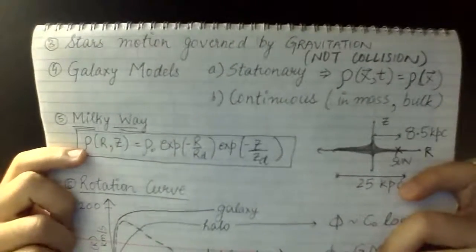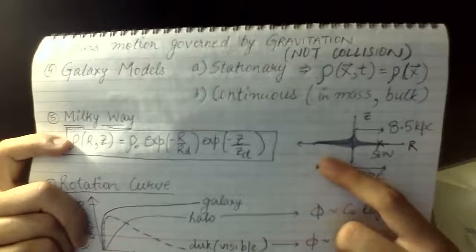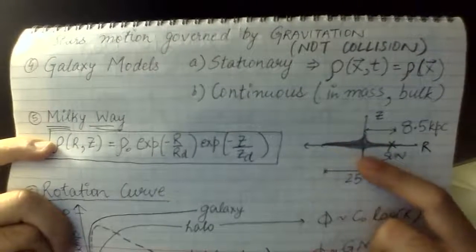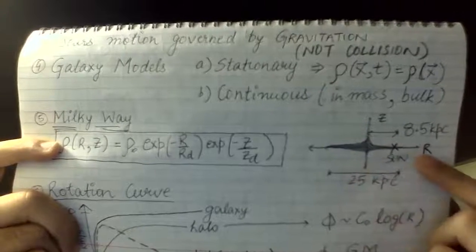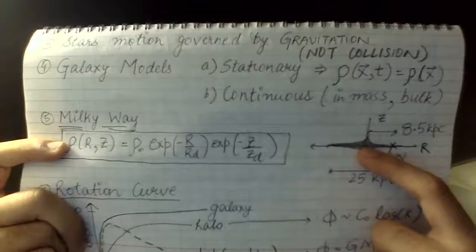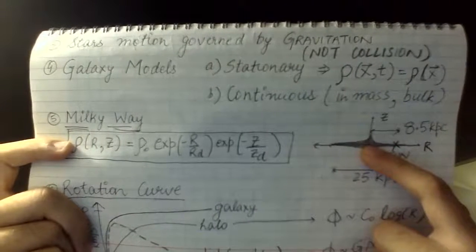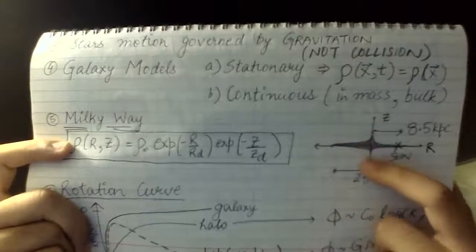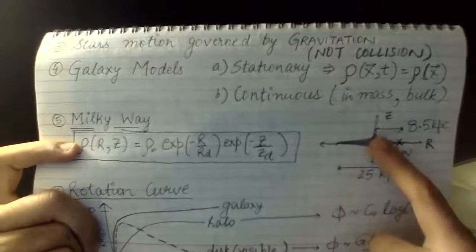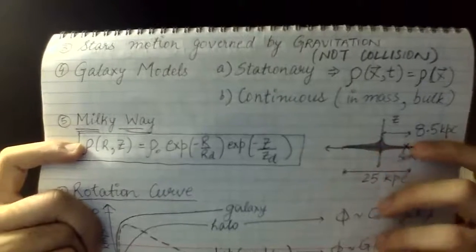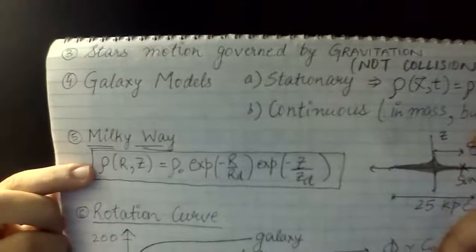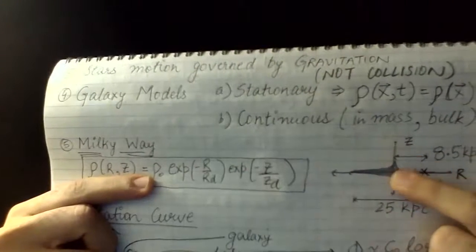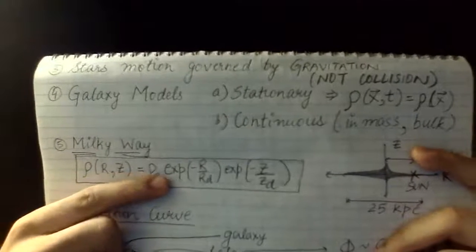Our own Milky Way is a disk galaxy. In cylindrical coordinates — with the R-axis and z-axis, with the center of the galaxy at the origin — it has an axially symmetric mass distribution and hence an axially symmetric potential. Our Sun sits about 8.5 kiloparsecs from the center of the galaxy, the total stretch of the galaxy is about 25 kiloparsecs, and the height is about 5 kiloparsecs.